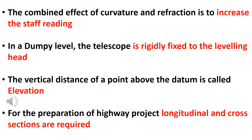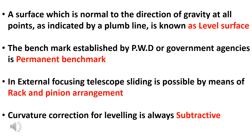For the preparation of a highway project, longitudinal and cross sections are required. A level surface is one that is normal to the direction of gravity at all points, as indicated by a plumb line. This is the definition of the level surface.